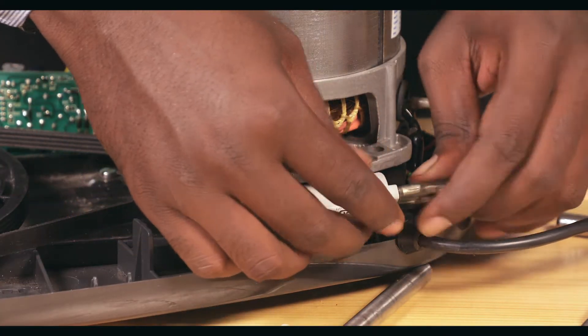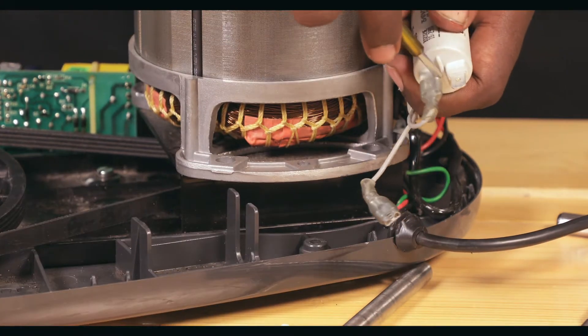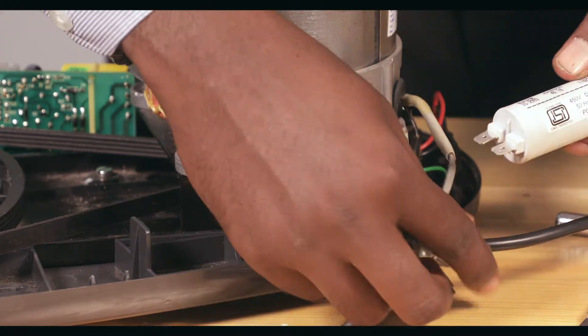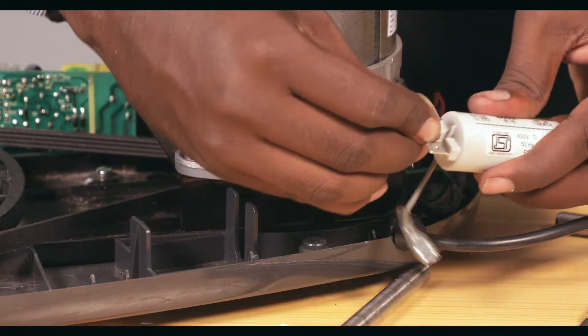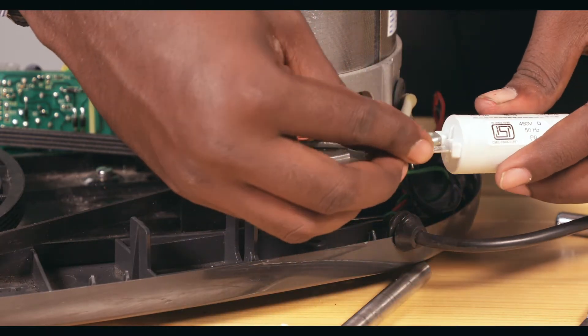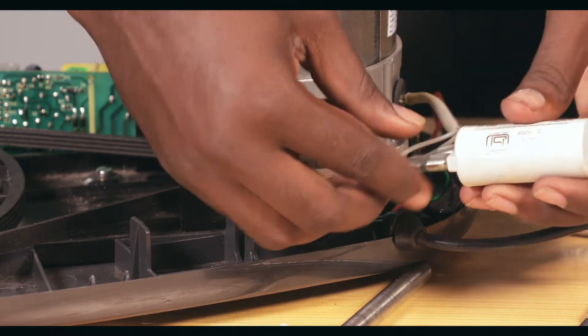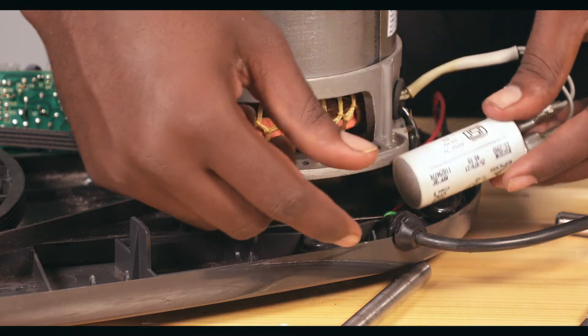Now, to change the motor capacitor, disconnect the wires from the capacitor as shown. Take the new capacitor and reconnect the wires. Place the new motor capacitor in its slot.